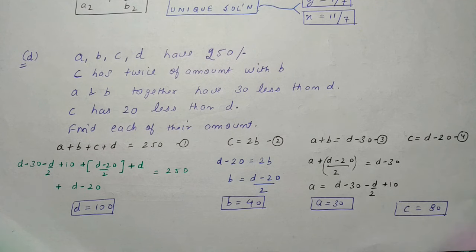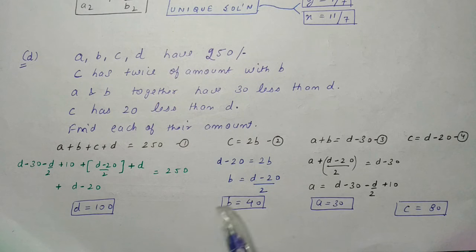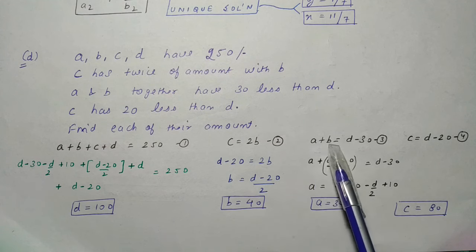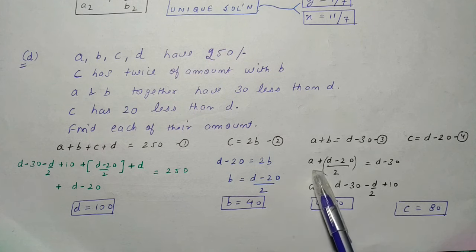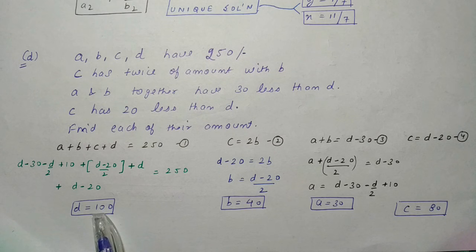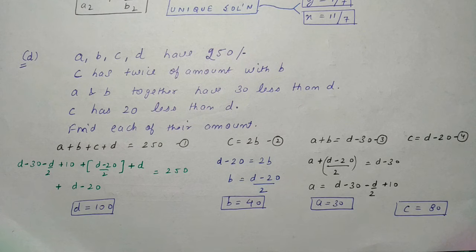सारे variables की value d की form में निकालते हैं। c = d - 20, और चूँकि c = 2b, तो b = (d - 20)/2। A की value: a = d - 30 - (d/2 + 10)। सारी values d की form में डालने पर d = 100 आता है। फिर b = 40, a = 30, c = 80। इस तरह system of equation solve हो गया।